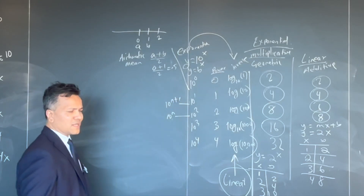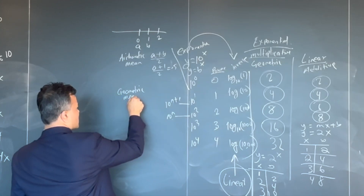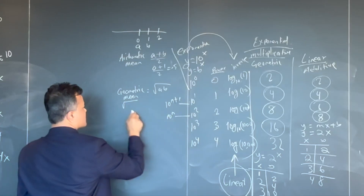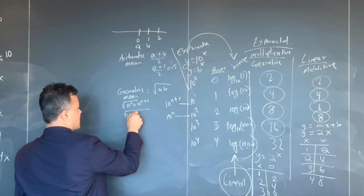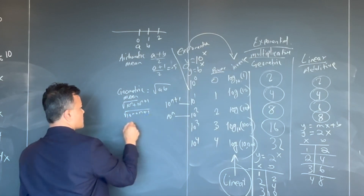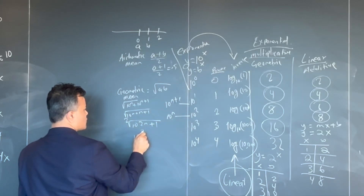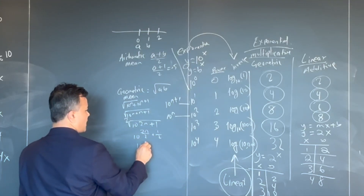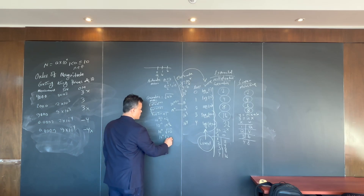The geometric mean is the square root of A times B. So A is 10 raised to N and B is 10 raised to N plus 1. That gives 10 raised to N plus N plus 1, which is 10 raised to 2N plus 1, and taking the square root gives 10 raised to N plus one half. So 10 raised to one half is the square root of 10, which is approximately 3.16.